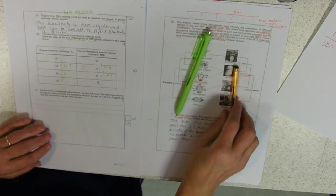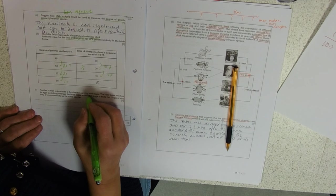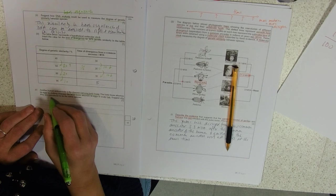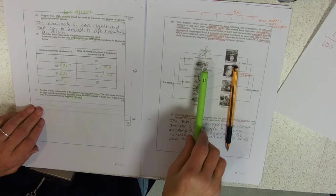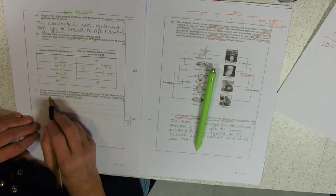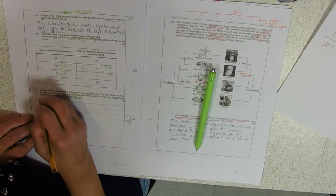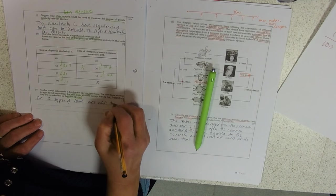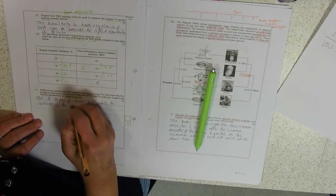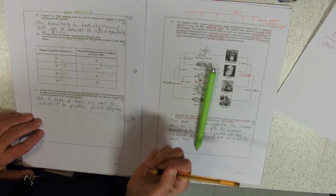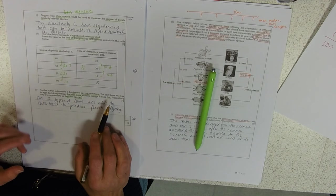Another human ectoparasite is the disease-carrying body louse. Body louse attaches its eggs to clothing, head louse attaches its eggs to scalp hair. Suggest why they are considered to be the same species. What do we know about the same species? Same species interbreed to produce fertile offspring. So if they are the same species, they must be interbreeding to produce fertile offspring. So the two types of louse are able to interbreed. I'm pretty much guessing that is correct, because if you think about it, head louse attaches its eggs to scalp hair, but your clothing is kind of made of sheep hair, so not too different really.